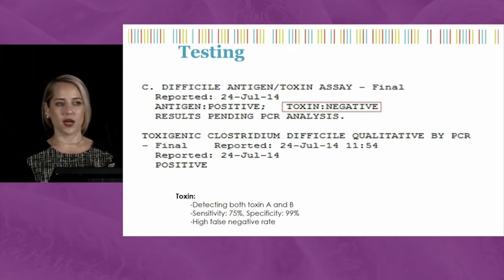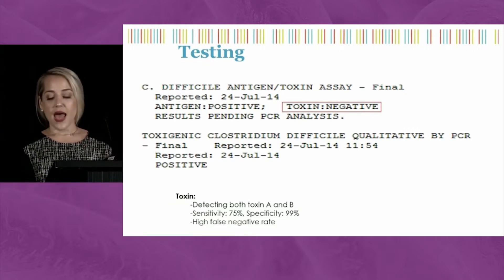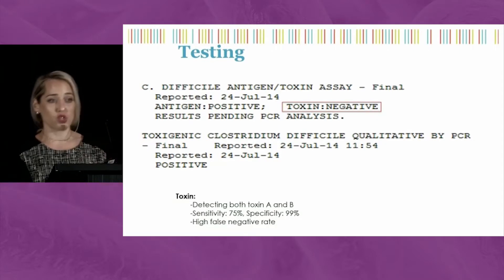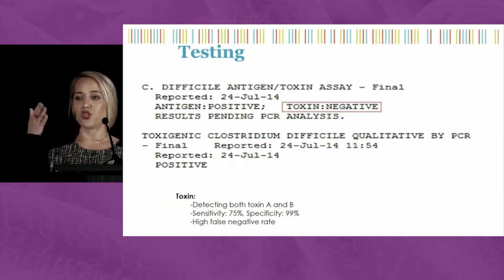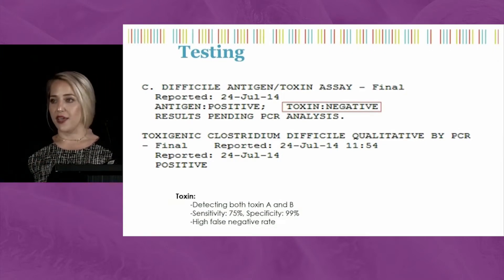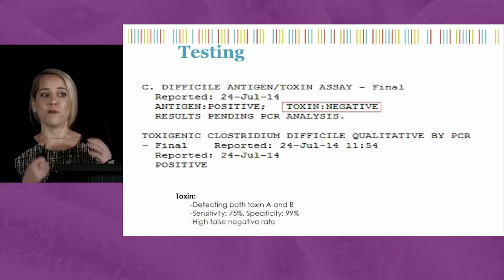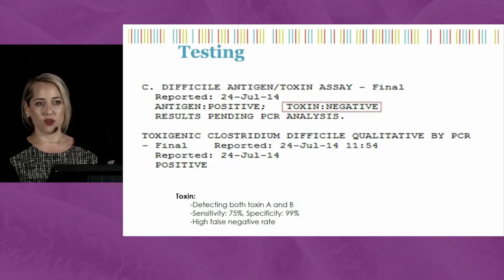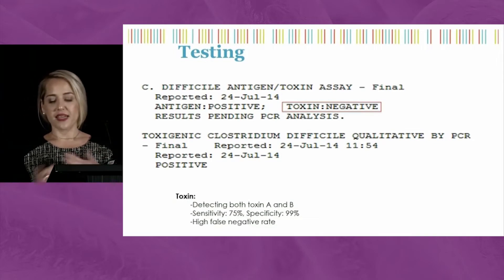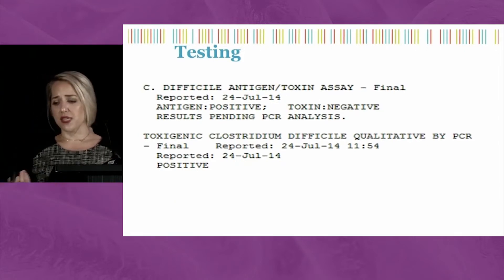The next test is the toxin test, also called the EIA toxin test. This is an ELISA-based test specifically looking for the presence of toxin. In older iterations, this test was felt to be not very sensitive, with concern for high false-negative rates—you may remember needing three or four consecutive tests for diagnostic accuracy. We're not doing that anymore, and the diagnostic accuracy is felt to be better, although not perfect. There's generally more confidence in this test than there used to be.